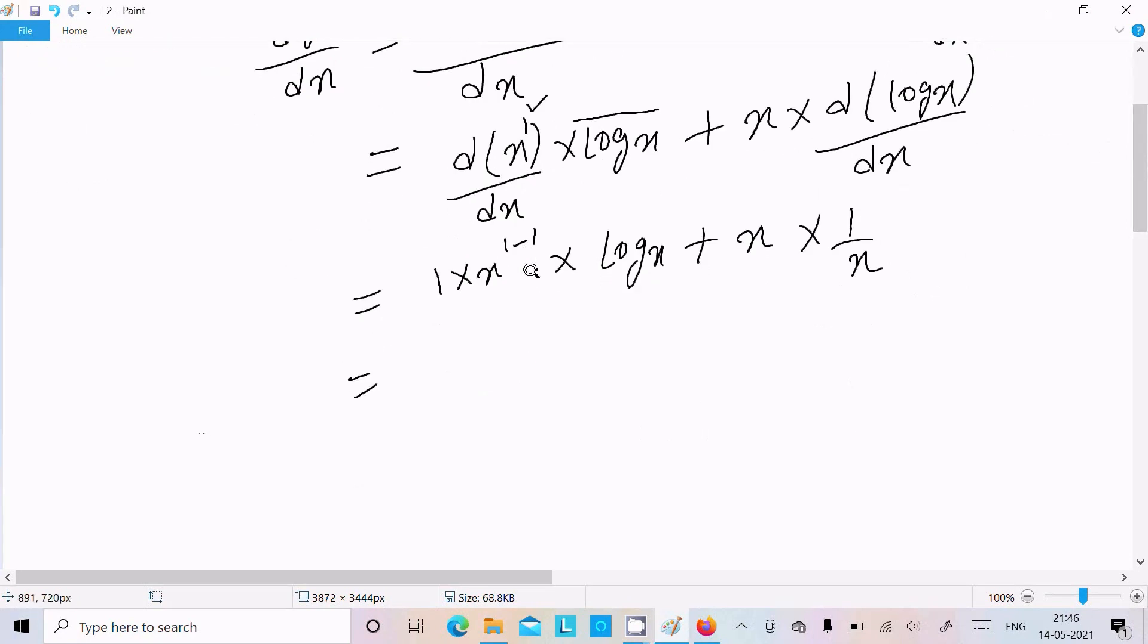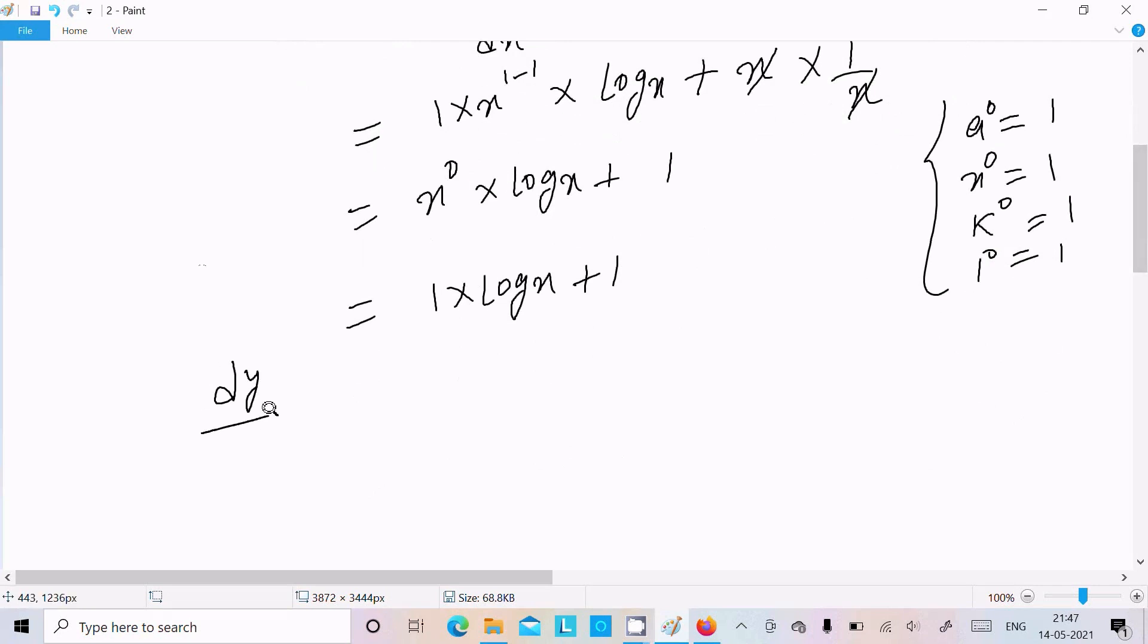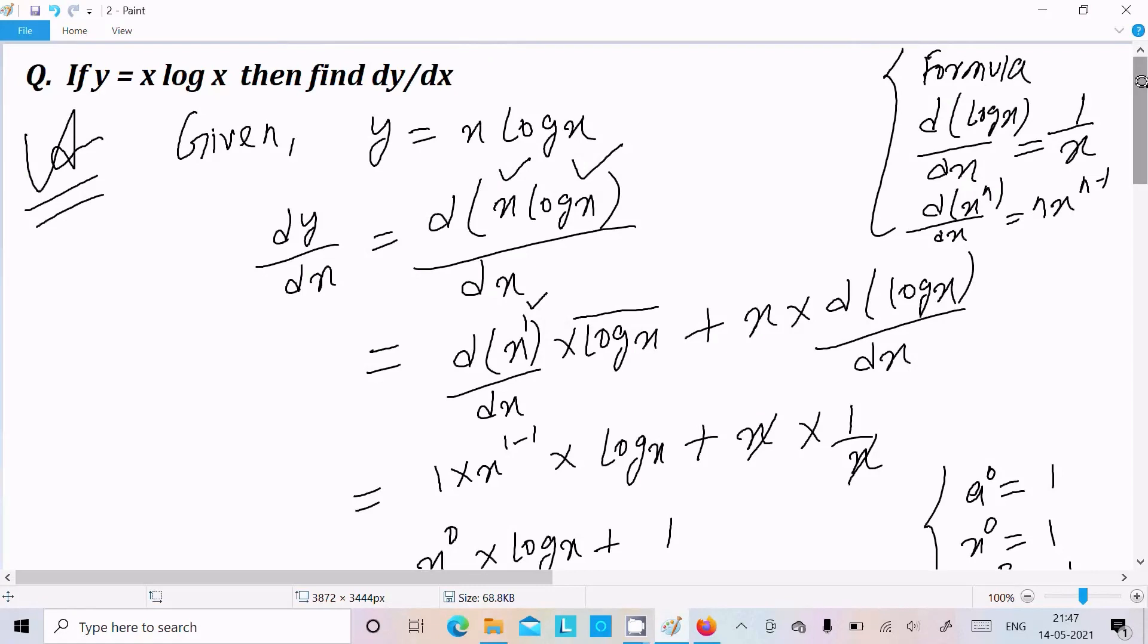So here 1 times x^0. x^0 comes, thereafter log x. And this x cancels, the value comes 1. Anything to the power 0 - like a^0, x^0, k^0, 10^0 - the value comes 1. So here 1 times log x plus 1. Now therefore dy/dx equals 1 plus log x. So this is our answer.